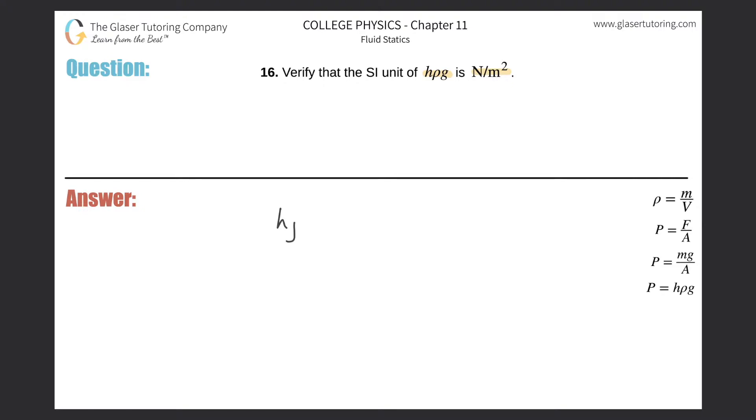So I'm going to write h times the depth, times the density, multiplied by gravity. These units have to equal the newton per meter squared.